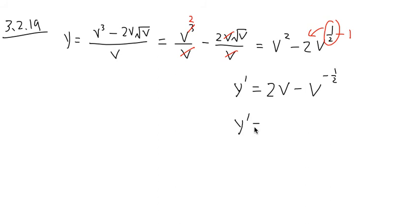And altogether, we can also rewrite this as 2φ minus 1 over square root of φ, just like this.